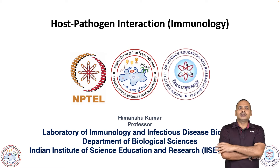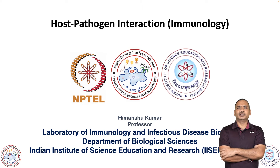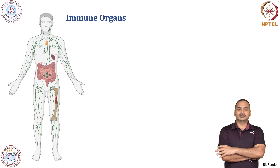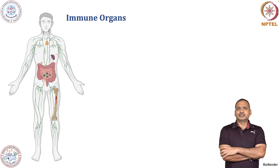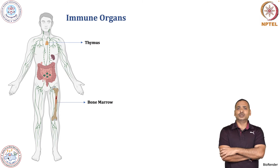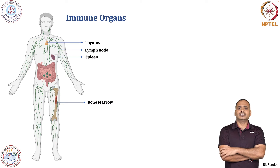The course will begin with the immune organs. This immune organ basically consists of — here you can see — the thymus, the bone marrow, spleen, and there is a lymph node.